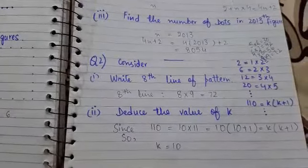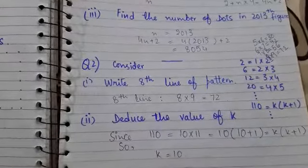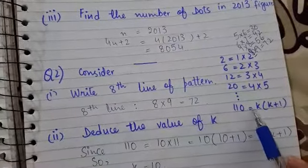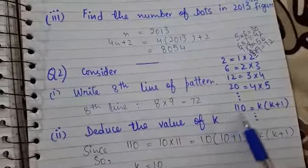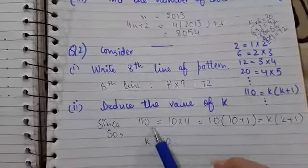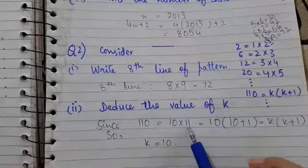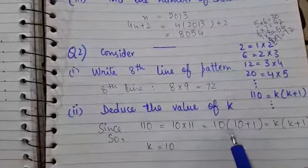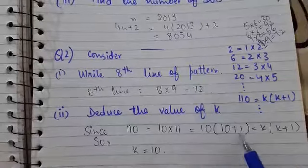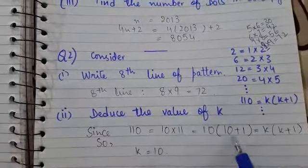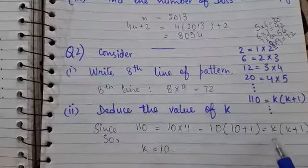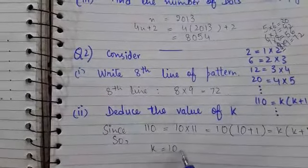In part 2, we have to find the value of k. From the pattern, 110 = k(k + 1). Since 110 = 10 × 11, we write this as 10 × (10 + 1). Comparing with k(k + 1), we can observe that k = 10.